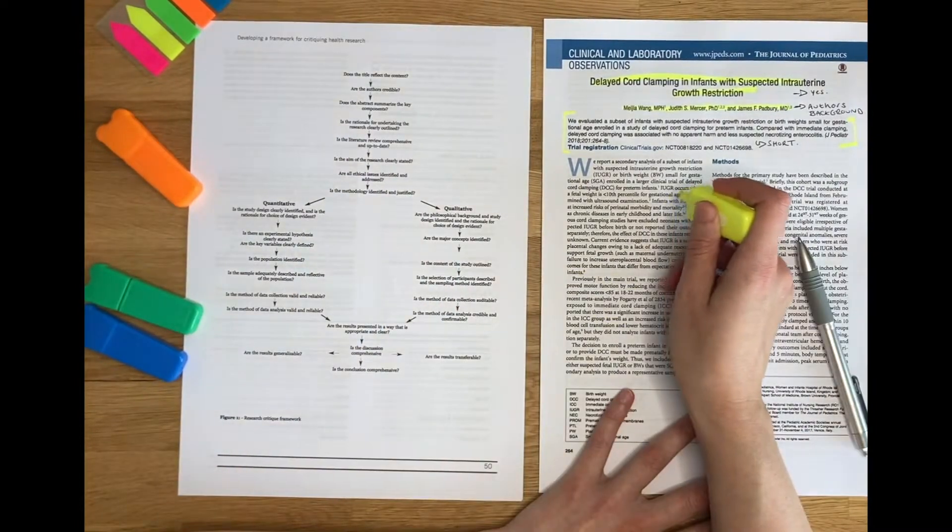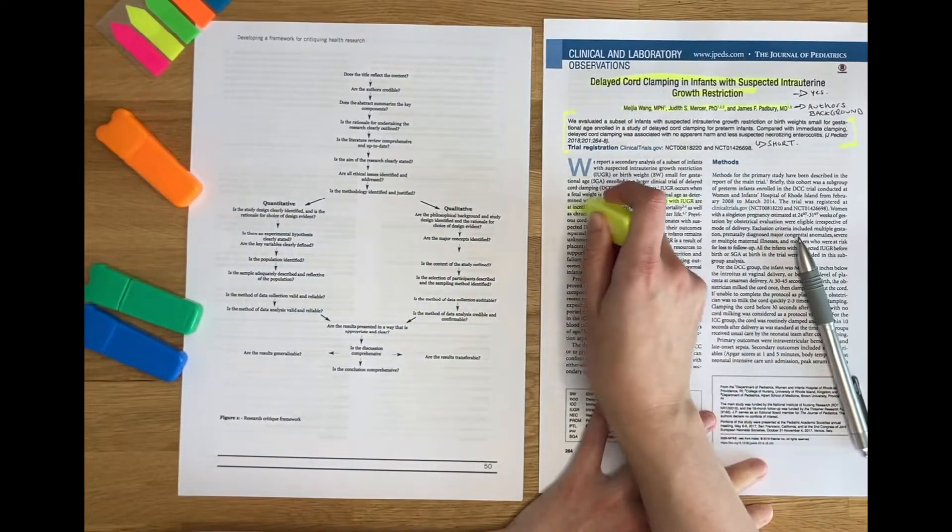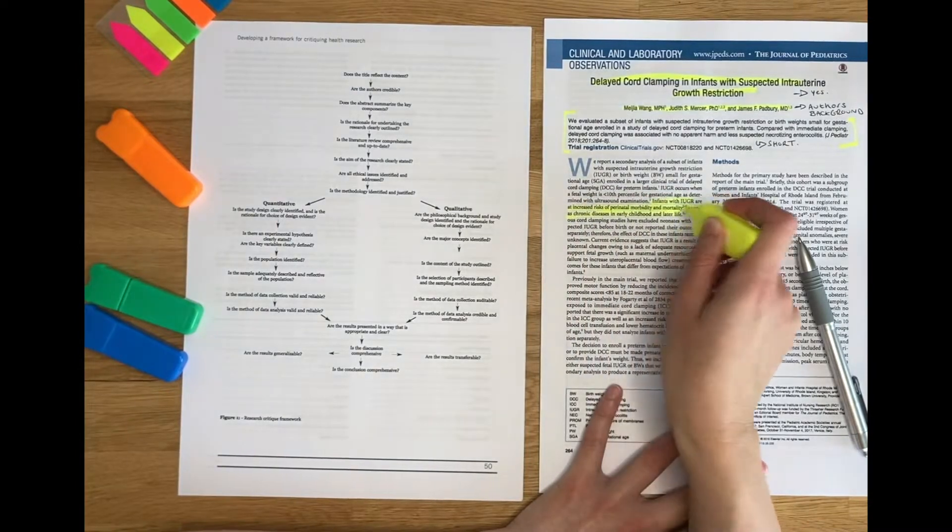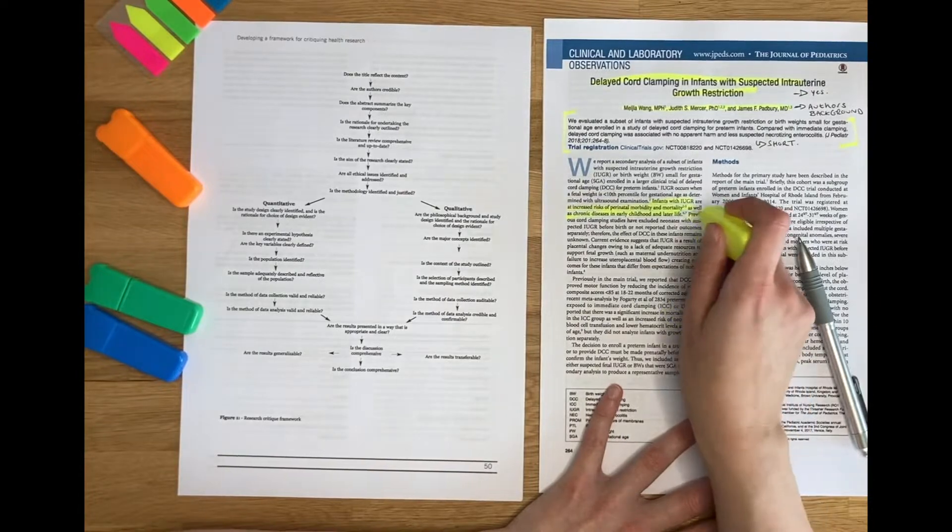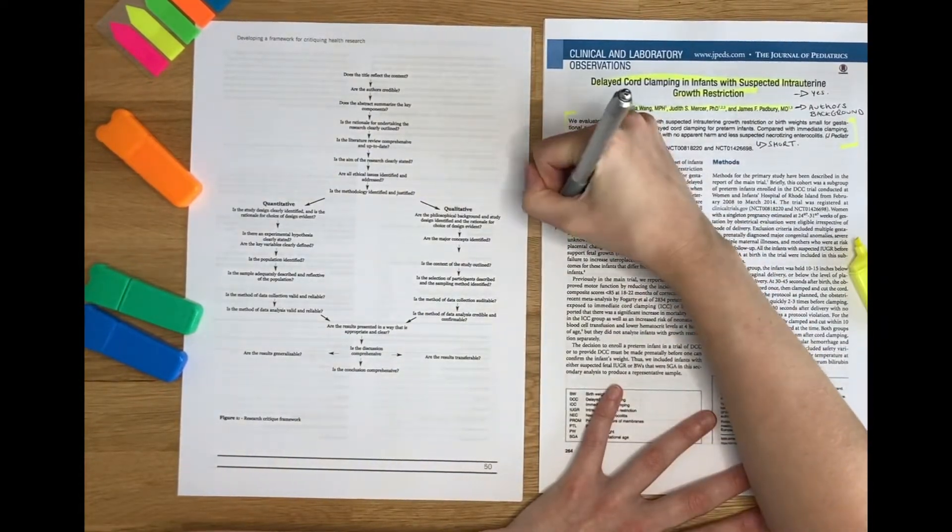So reading through, I can pick out some information which details the rationale for undertaking the research. And again, I'm going to label this so I know what to think about when I come back to it.